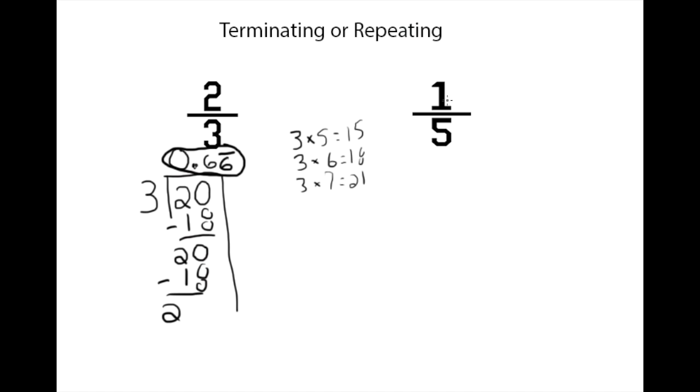Going to our second example, 1 fifth. Remember, we want that bottom number, or our denominator, our divisor, to be on the outside of the brackets. Then we can continue on with our division. How many times can 5 go into 1? 0 times, because 5 is bigger than 1. So now we need to take this 1, multiply it by 10, add a 0 behind it, to continue on with our division.